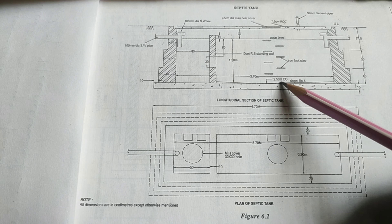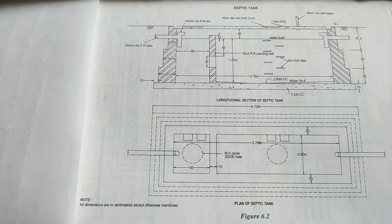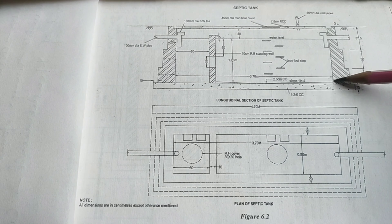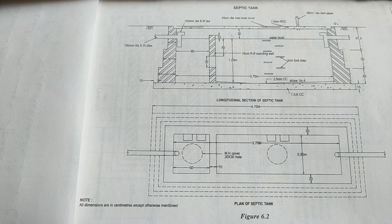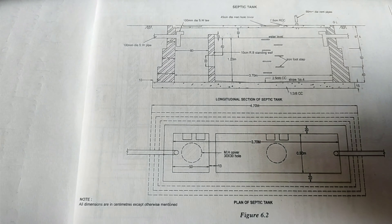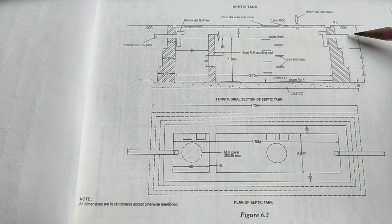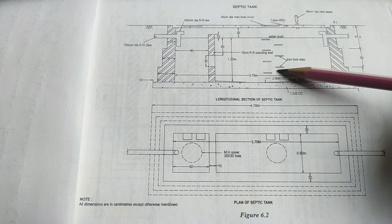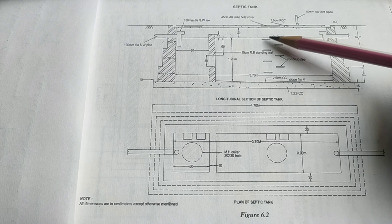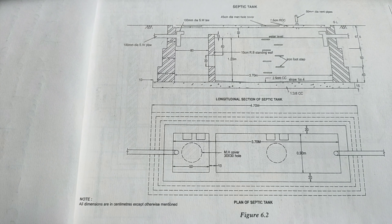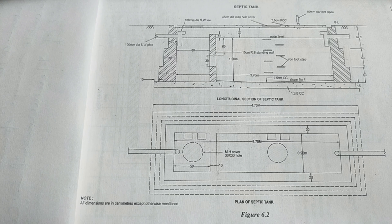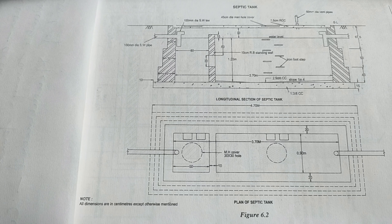For CC flooring with 2.5cm CC slope, measured in square meters: 1 number, length 3.7m, breadth 0.9m. Additionally, you can add one inlet pipe, one outlet pipe, one ventilating pipe, and seven iron footsteps to the estimation. Prepare an abstract with given rates. I hope this problem is clear — thank you.